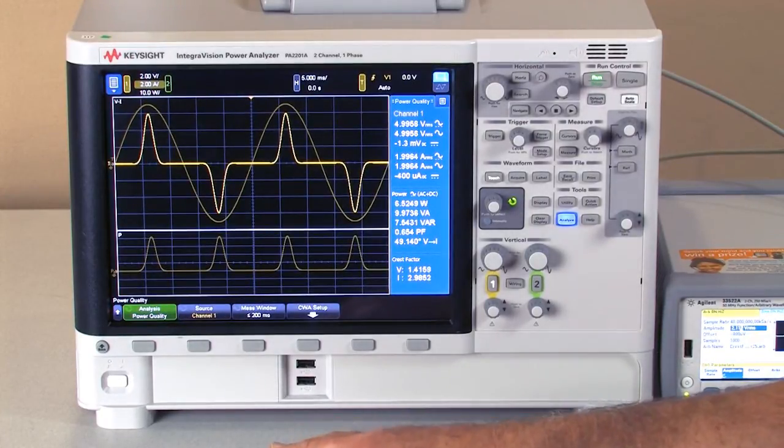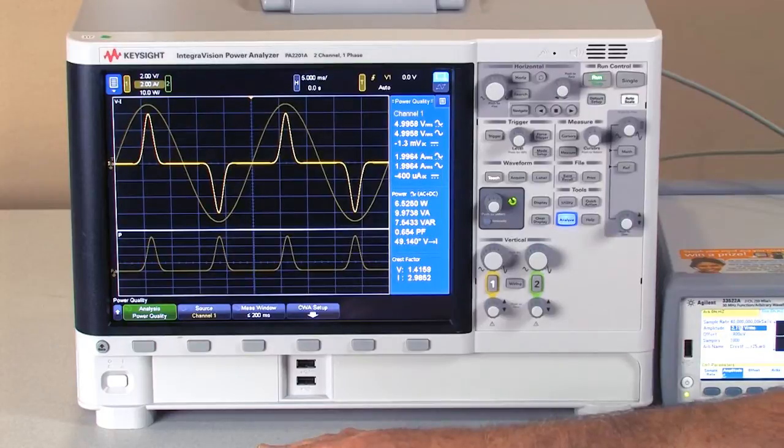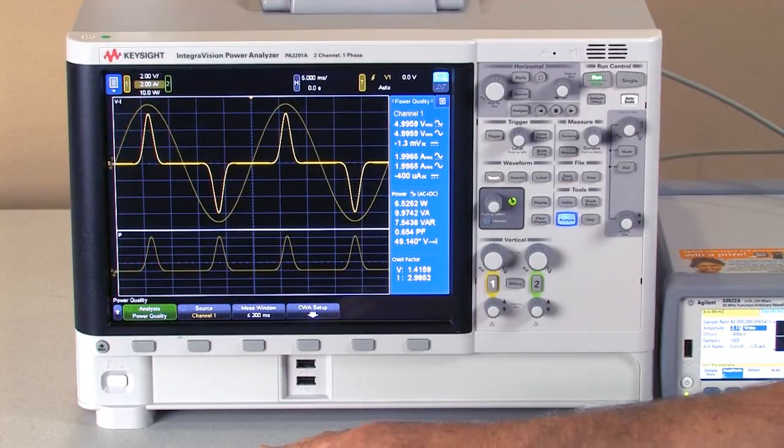If you remember, crest factor is defined as the ratio of the peak to RMS value of the signal. The PA2201A can actually measure crest factors of up to 3 on a full-scale signal.